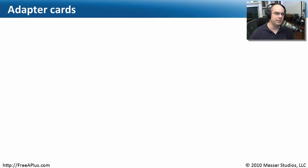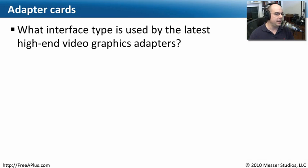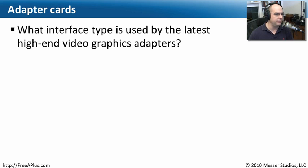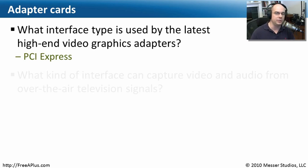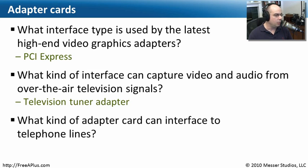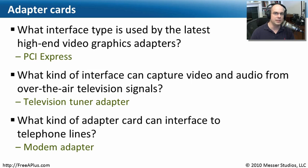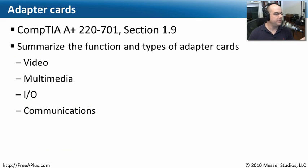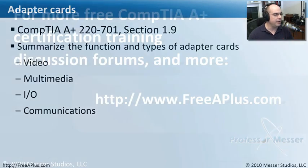Let's go through some Q&A to recall what we've learned in this adapter cards module. What interface type is used by the latest high-end video graphics adapters? Only one interface type had the throughput to support high-end video graphics adapters — PCI Express. What kind of interface can capture video and audio from over-the-air television signals? That's a television tuner adapter with a coax connection. What kind of adapter card can interface to telephone lines? That would be a modem adapter. This covers the CompTIA A+ 220-701 Essentials Exam, Section 1.9 — adapter card interface types including video, multimedia, I/O, and communication adapters.